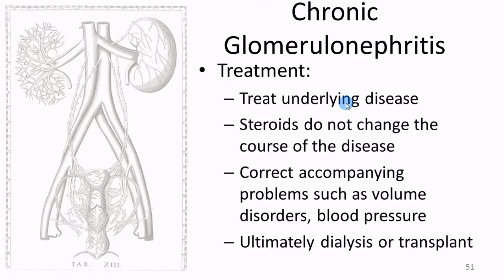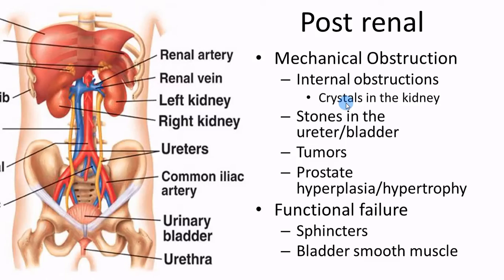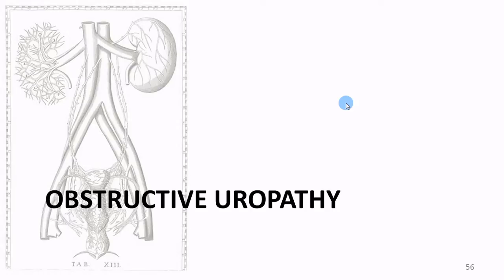Post-renal disease involves flow beyond the kidney. Mechanical obstructions are things physically blocking the pathway — a tumor, prostate swelling, or kidney stones. Functional problems involve muscles not working properly: sphincters not relaxing, or bladder smooth muscle becoming fibrotic. This parallels what we discussed with the GI tract — mechanical versus functional obstruction.